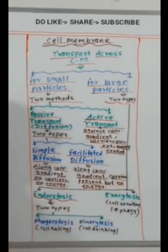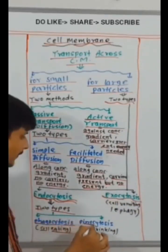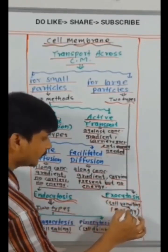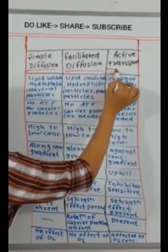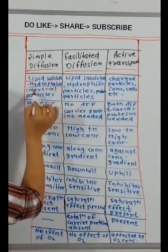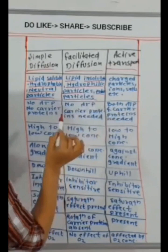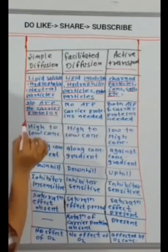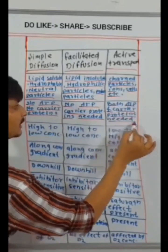For large particles, two types: endocytosis, exocytosis. Endocytosis, two types: phagocytosis, cell eating. Pinocytosis, cell drinking. Exocytosis means cell vomiting or effigy. Simple diffusion: lipid-soluble hydrophobic, neutral particles. Facilitated diffusion: lipid-insoluble hydrophilic particles, polar particles. Active transport: charged particles, ions, salts, etc. No ATP, no carrier proteins. No ATP, carrier proteins needed. Both ATP and carrier proteins needed.